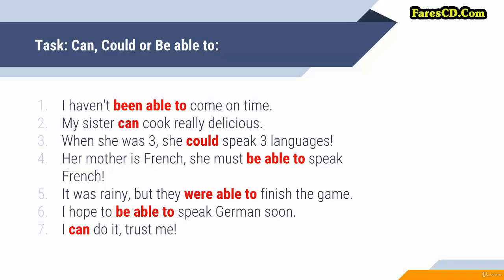'It was rainy, but they were able to finish the game.' — Only one option in this case: BE ABLE TO when you express momentous ability. 'I hope to be able to speak German soon — I really do.' — After a TO-infinitive, you need only BE ABLE TO. No other option here.